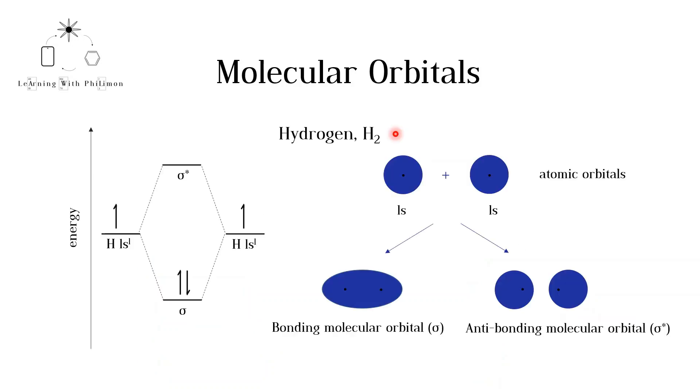Let's look at the example of hydrogen. Each hydrogen atom has one electron in the 1s atomic orbital. When two hydrogen atoms bond to form hydrogen, H2, the two 1s atomic orbitals must interact.